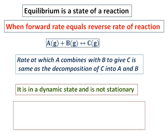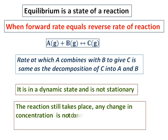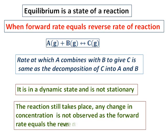Since something is happening, it is a dynamic state and it is not stationary. That's why we call this a dynamic equilibrium. The reaction still takes place, but any change in concentration is not observed, as the forward rate equals the reverse rate of reaction.